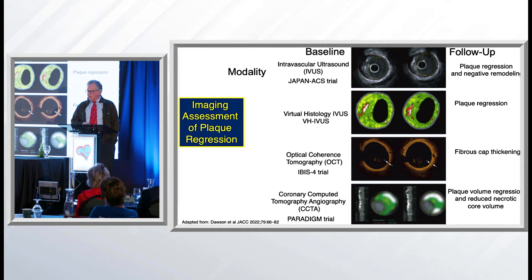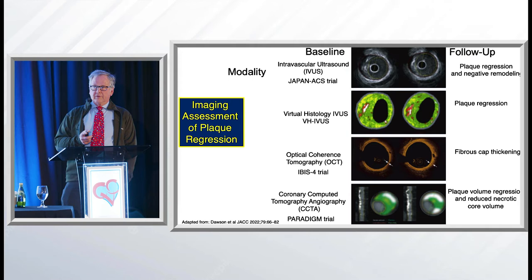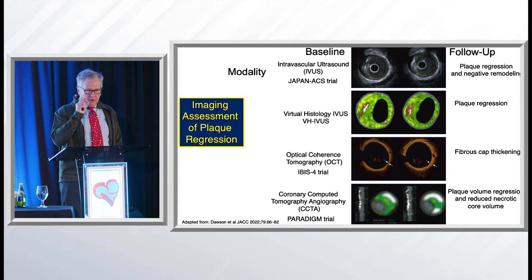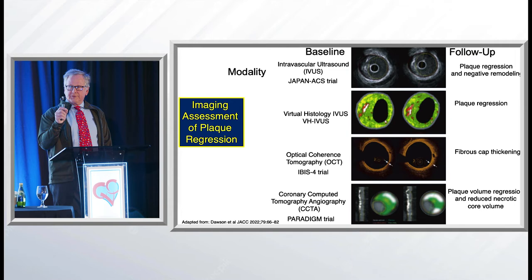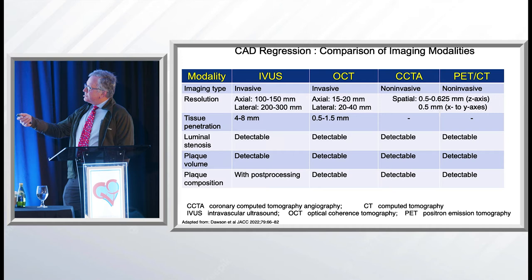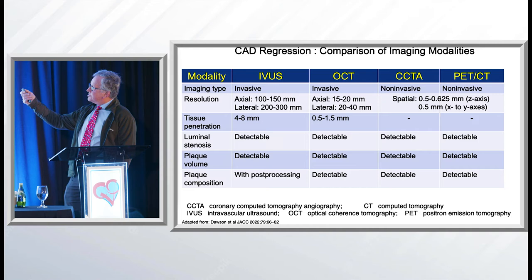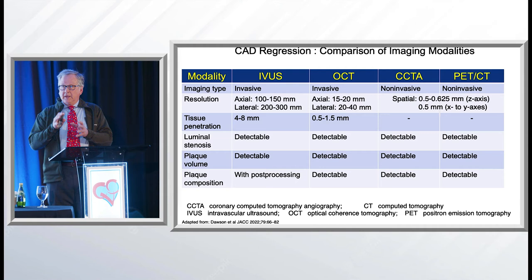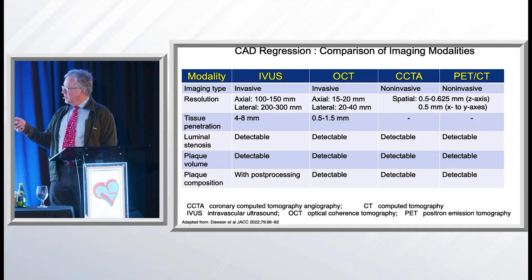CT has gotten so much better just in the last two years, both software and hardware. We just recently got the first photon CT in the world at Mayo in Rochester. The photon CT actually gives feedback to tell what the photon hit — did it hit calcium, lipid, or scar? So they can measure these things much more accurately. The only problem with IVUS and OCT is that they're invasive. CTA and PET-CT are non-invasive, and I think the non-invasive way is certainly the best approach.